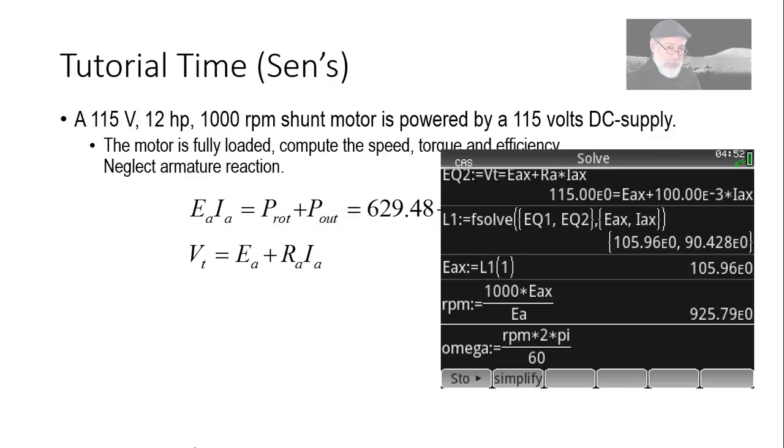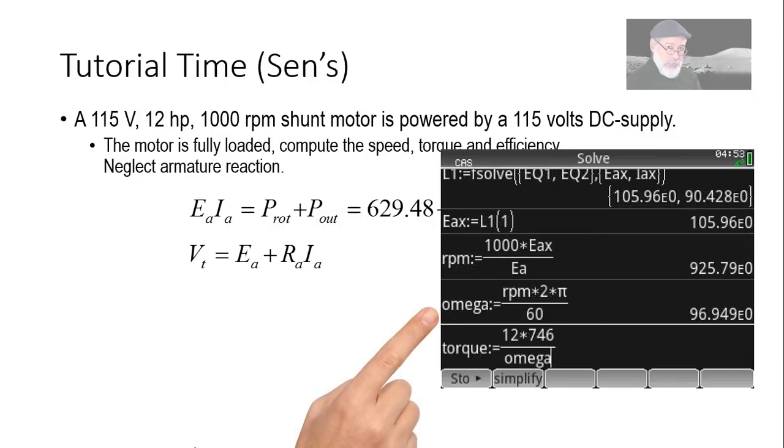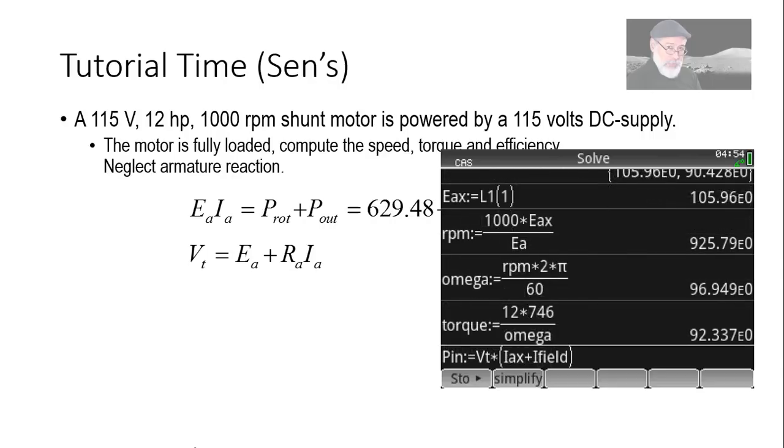Now, what is the torque? Omega in radians per second would be given as the rpm that I computed above, multiplied by 2π divided by 60, 97 radians per second. And the torque is the output power divided by that velocity, 12 horsepower multiplied by 746 watts per horsepower, a convention, divided by omega. That is the torque, 92 Nm.